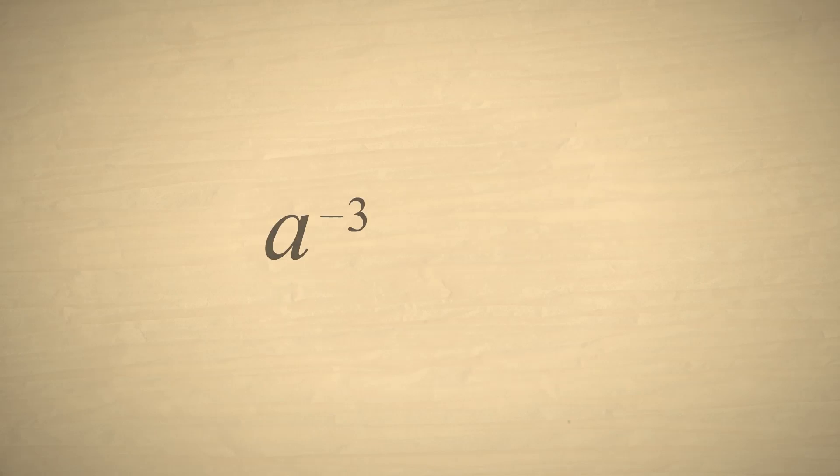For example, a to the negative third power is equal to one over a cubed, or one over a times a times a.